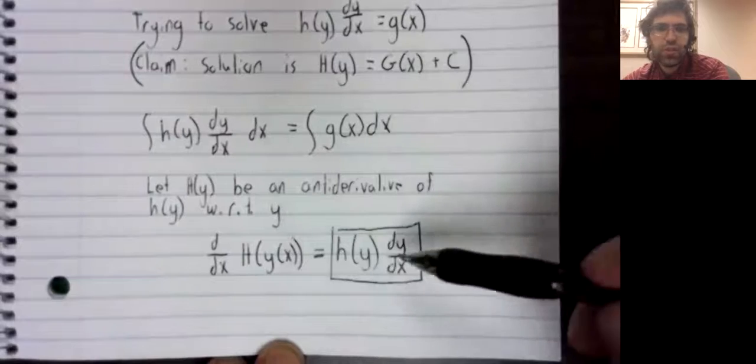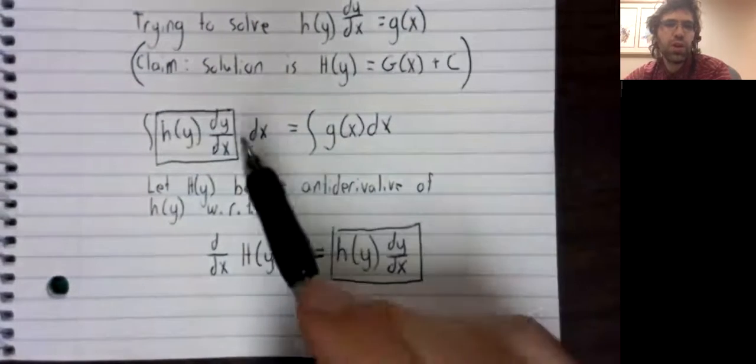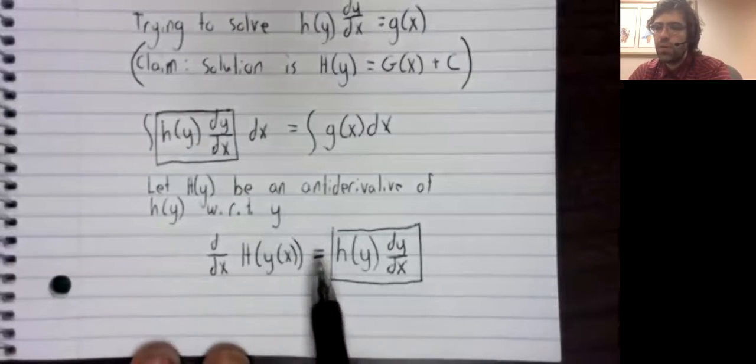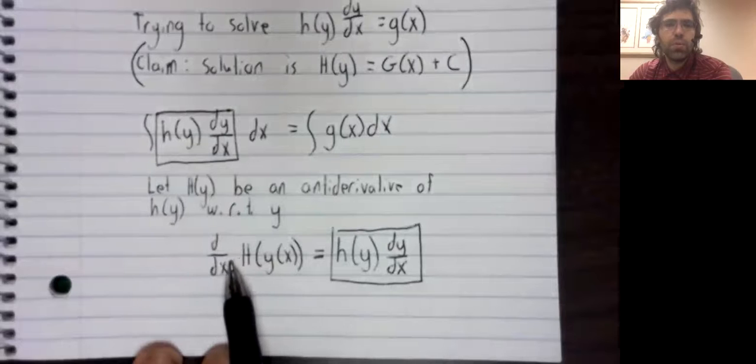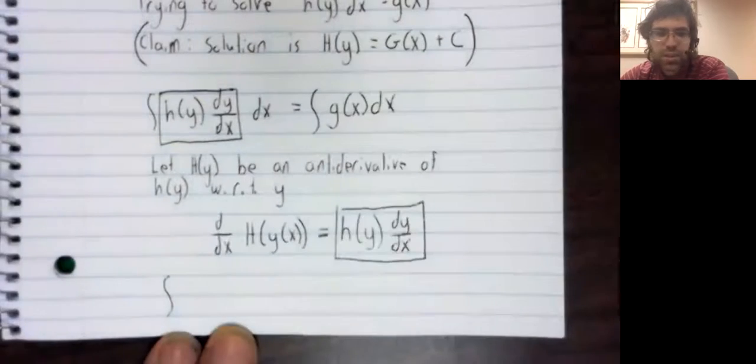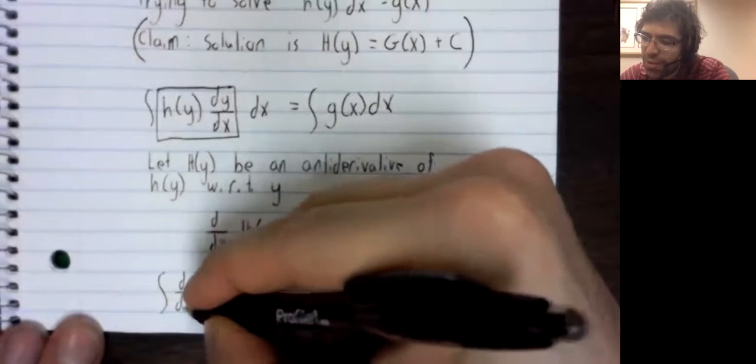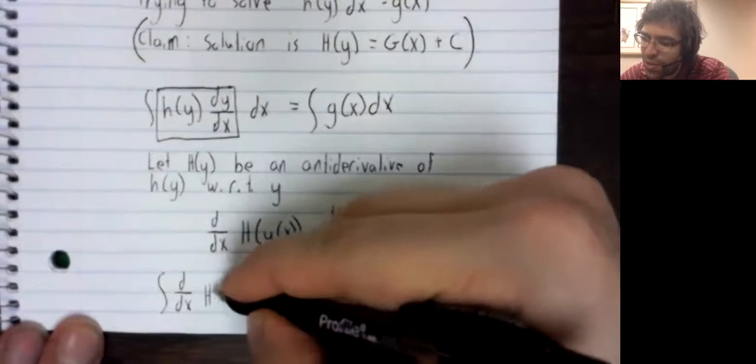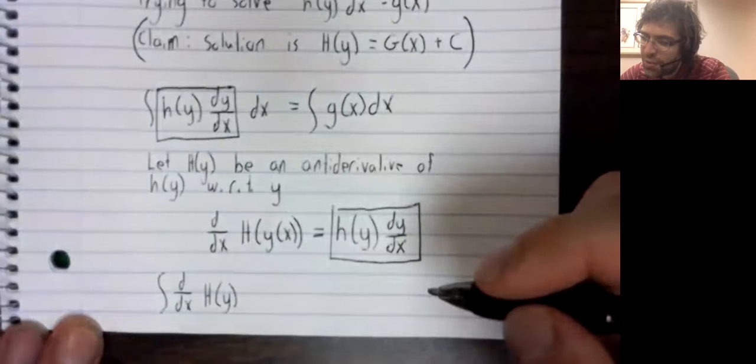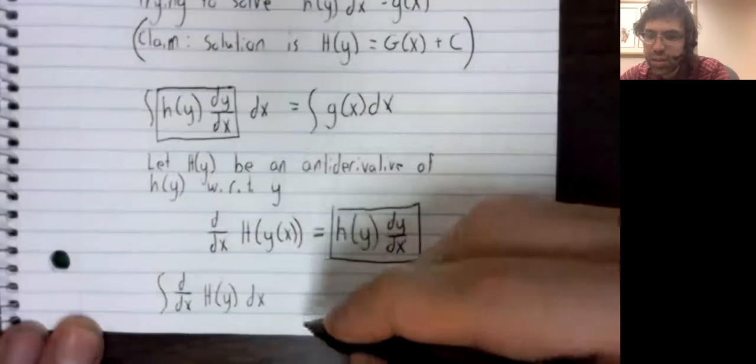And if this looks familiar, it's because we saw it up here. So this equals h(y) times dy/dx, which equals g(x).